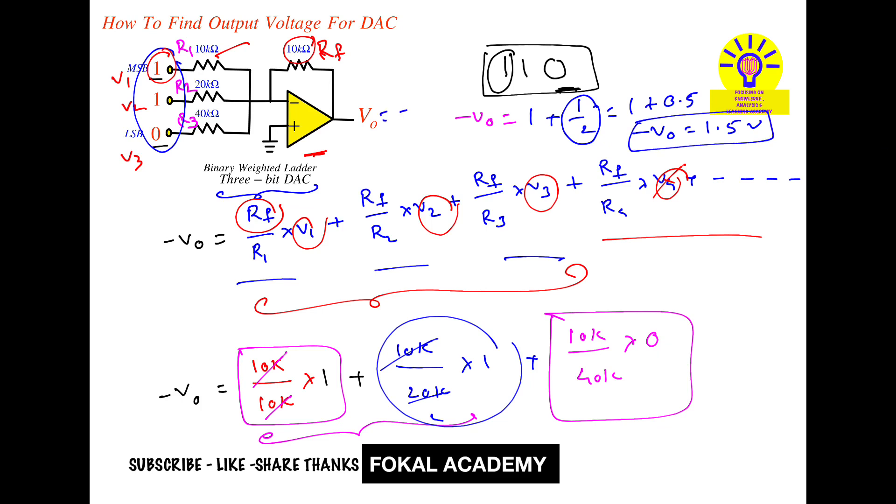So V naught is minus 1.5 volts. And this is the output voltage for the given circuit and this is the process of simplification. Thanks for watching, please subscribe, like, share. Thanks.